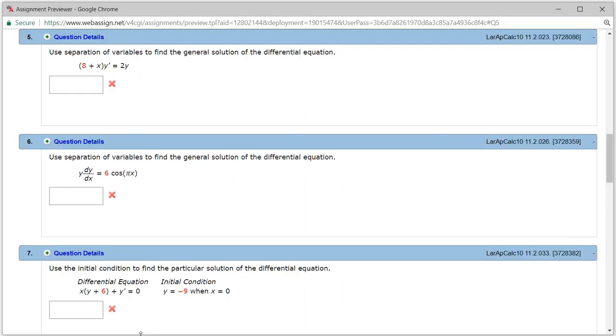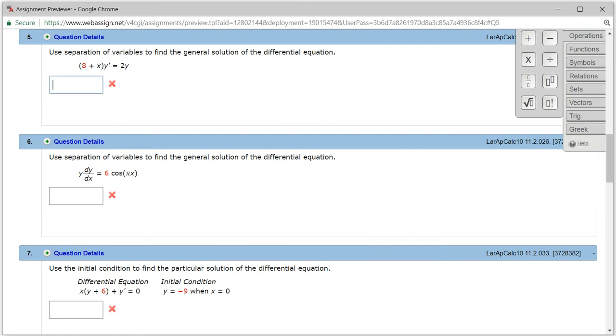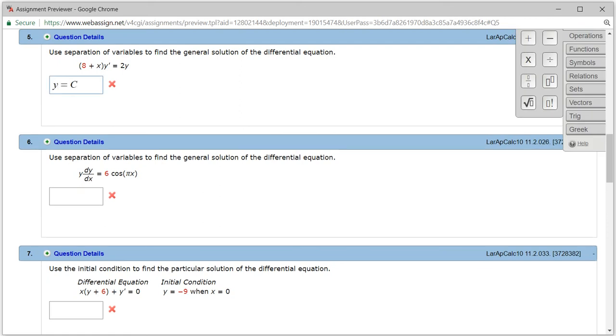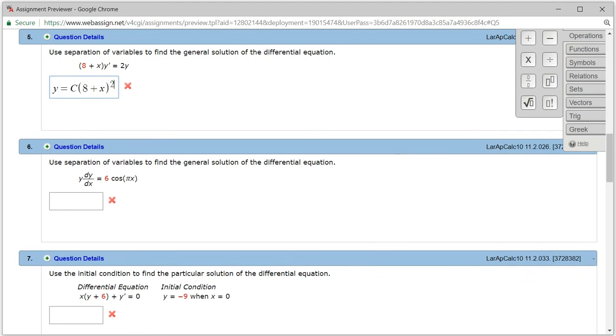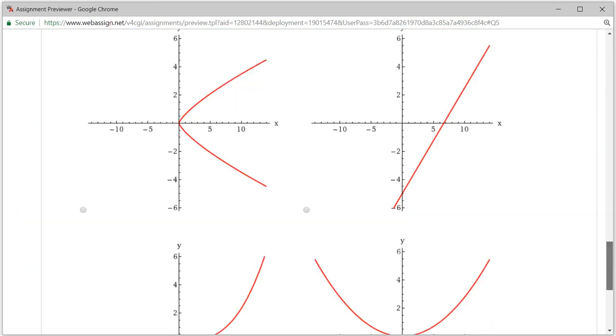So let's type it in. So we got y is equal to c times 8 plus x squared. So let's check the answer.